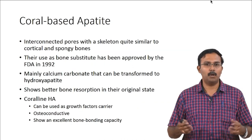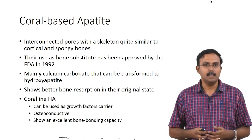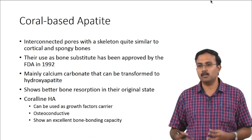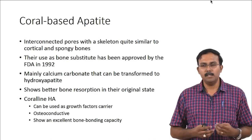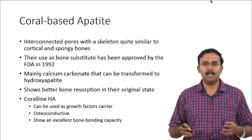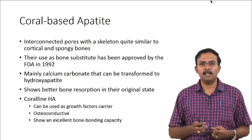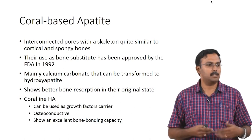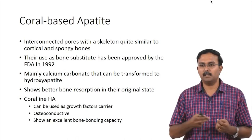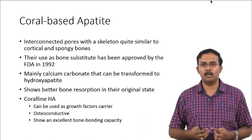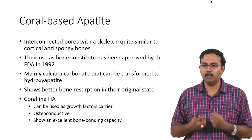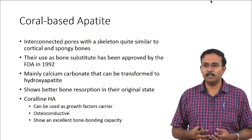Coral-based apatite is one of the older materials studied. These have interconnected pores with a skeleton similar to the cortical and spongy bones of your body. It was approved for use as a bone substitute by the FDA in 1992. It is primarily calcium carbonate that can be transformed into hydroxyapatite using chemical reactions. It shows better bone resorption in its original state — bone resorption means it will be absorbed by your body and replaced by actual bone tissue.